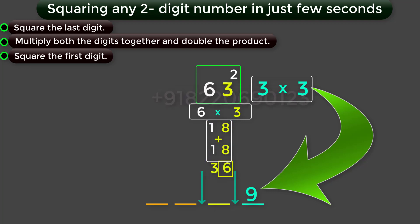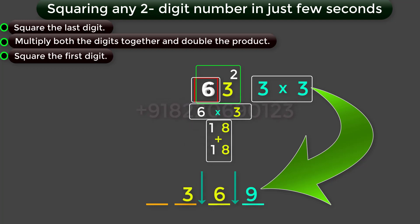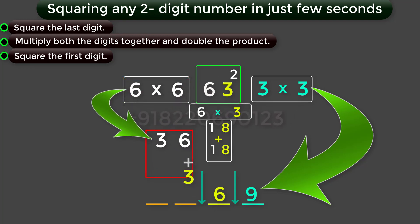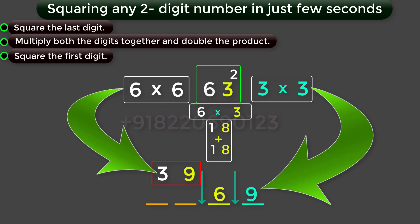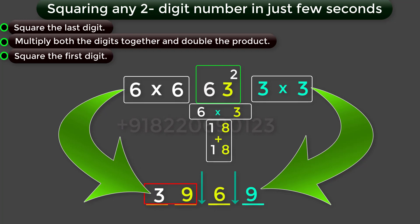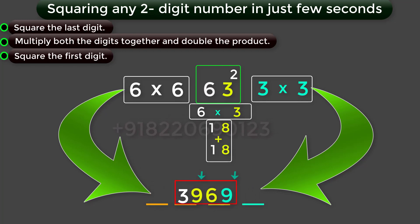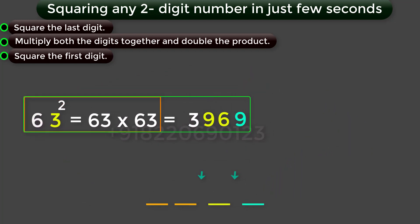In this 36, the 6 becomes the middle part of the answer, and the 3 moves to the first part of the answer. Next, find the square for the first digit 6, you will get 36. Now, add this 36 to the digit 3, you will get 39. This 39 becomes the first part of the answer. Combine all these digits together, you will get the number 3969, which is the square of 63.